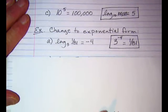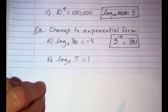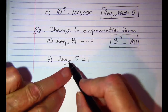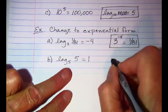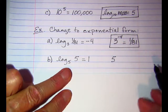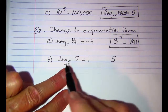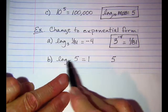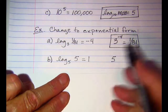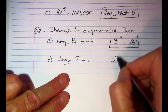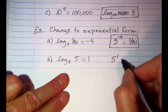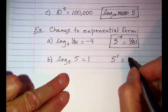Another example. The base of our logarithm is 5, so the base of our exponential is also 5. The log is the exponent, so this is my exponent. And the argument is what my exponential is equal to.